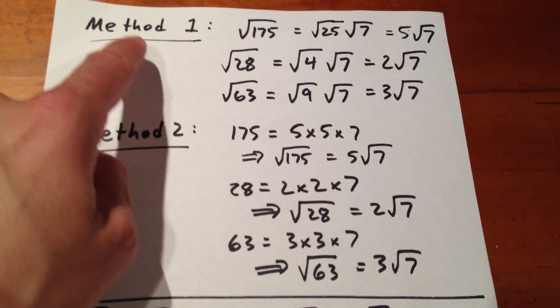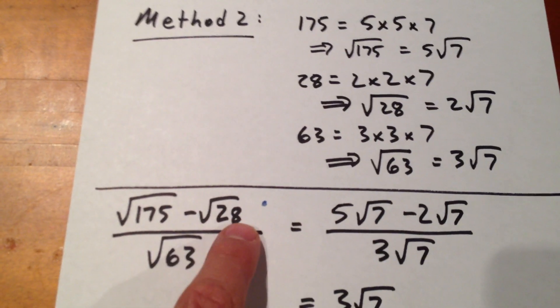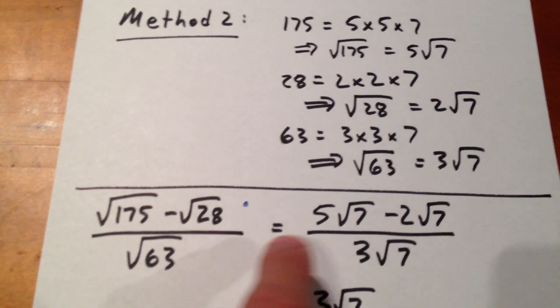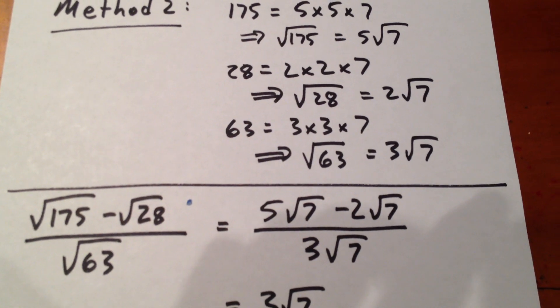Either way, whether we use method 1 or method 2, we come to the realization that root 175 minus root 28 over root 63 is like saying 5 root 7 minus 2 root 7 over 3 root 7.